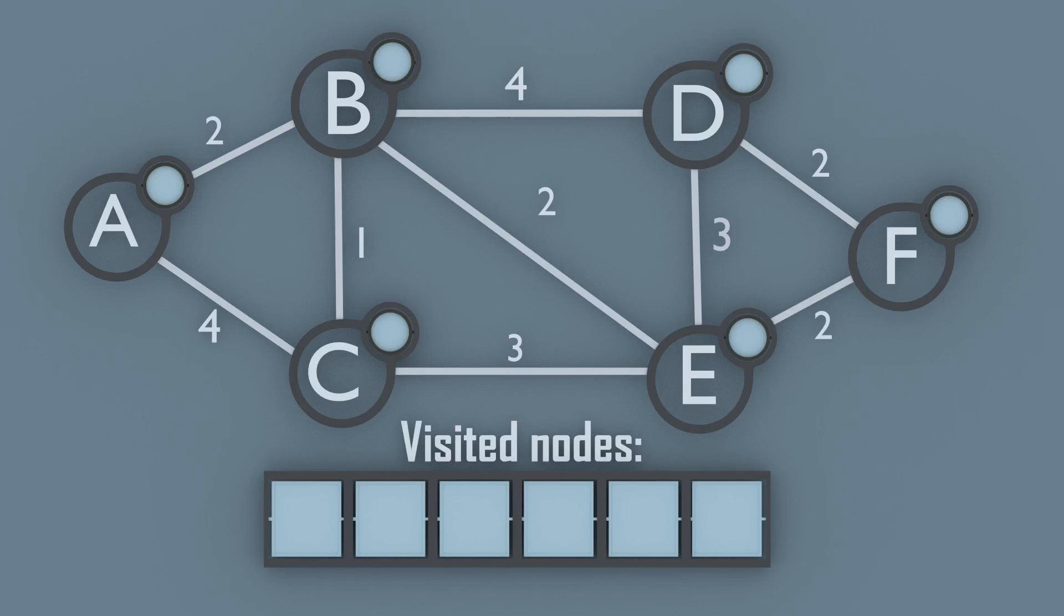Let's look at the algorithm through a simple example of a network of six nodes from node A to node F. We begin by setting the starting node's weight to zero and every other node's weight to infinity. We also keep track of the already visited nodes.